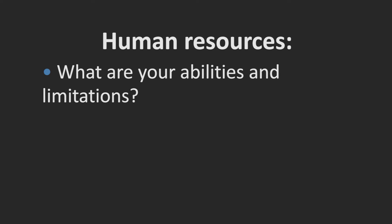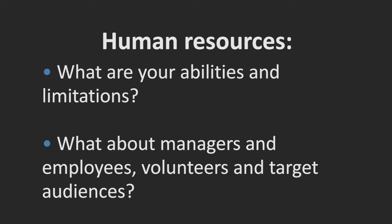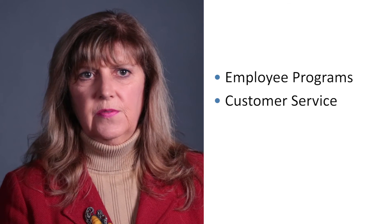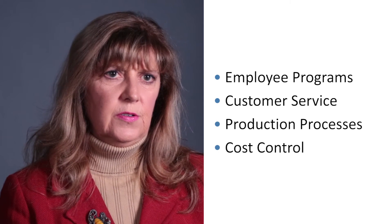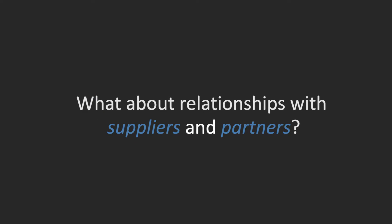Human resources: what are your abilities and limitations? What about managers and employees, volunteers and target audiences? Natural resources: what about your soil if you're going directly in the soil? Current processes: what do you do better than your competitors? This could include employee programs, customer service, production processes, or cost control. What about relationships with suppliers and partners?